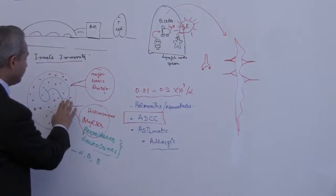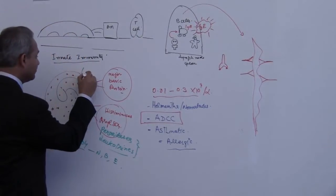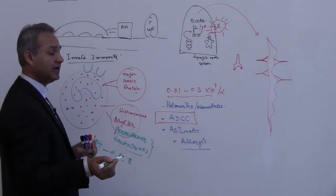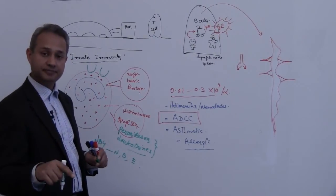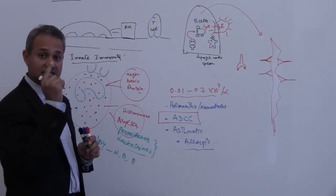Then the eosinophil has receptors on its body, on its surface for IgE just like mast cell had. So eosinophil actually has receptors for both IgE and IgG. In this particular case it is IgE, remember this is IgE.